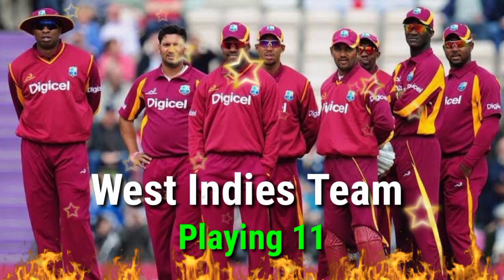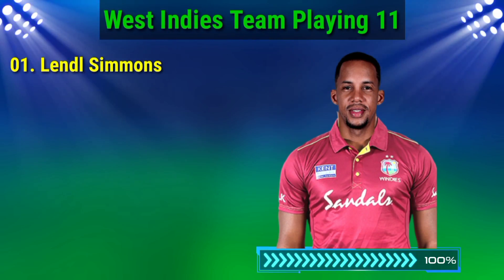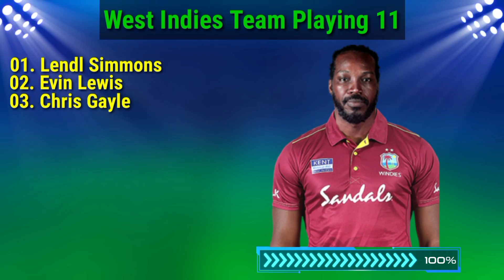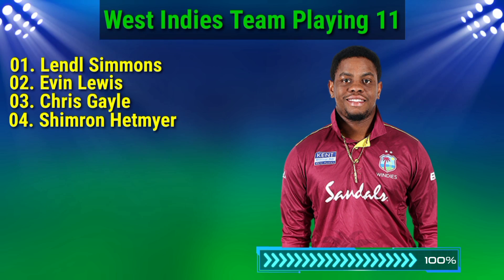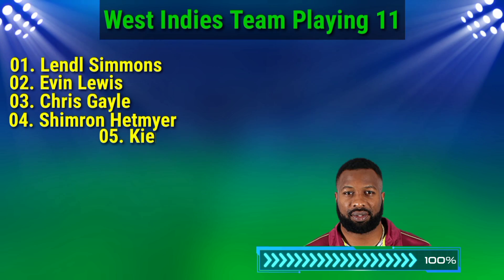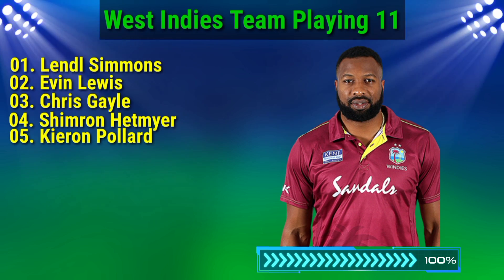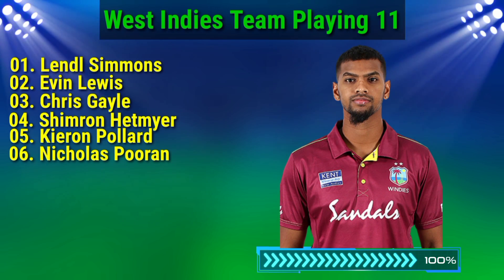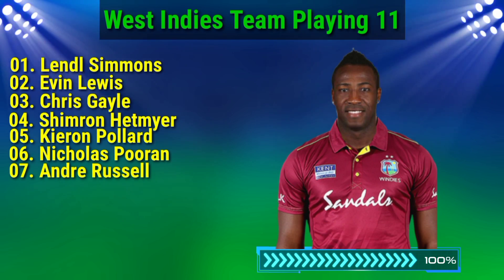West Indies playing 11: No.1 Batsman Landon Simmons, No.2 Batsman Evan Lewis, No.3 Batsman Chris Gayle, No.4 Batsman Shimron Hetmyer, No.5 All-Rounder Tyrone Pollard, No.6 Wicketkeeper and Batsman Nicholas Pooran.